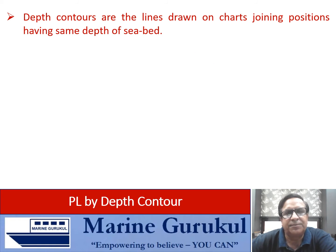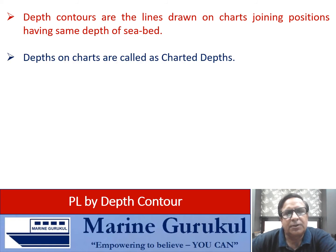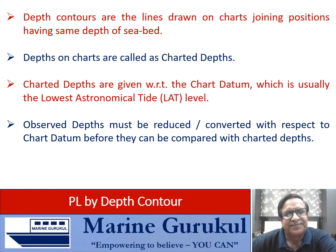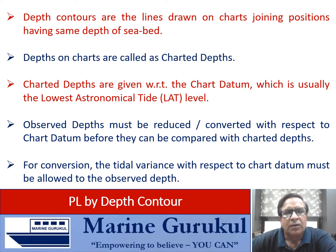Depths on a chart are called charted depths. Charted depths are given with respect to chart datum, which is usually the lowest astronomical tide level. Observed depth must be reduced or converted with respect to chart datum before it can be compared with charted depths. A tidal correction with respect to chart datum must be applied to the observed depth.